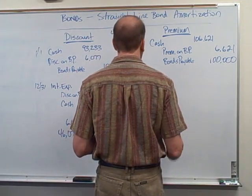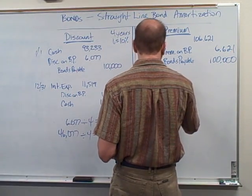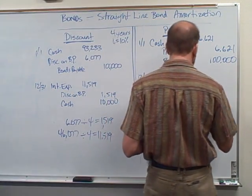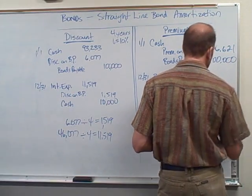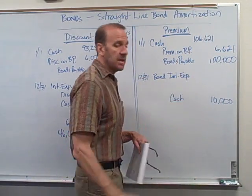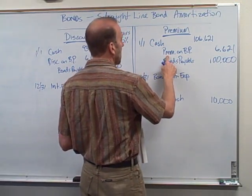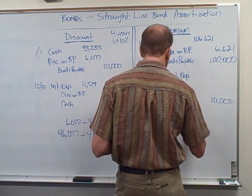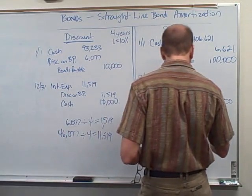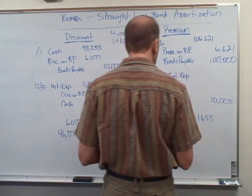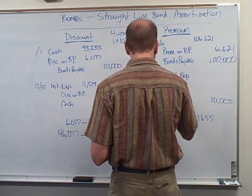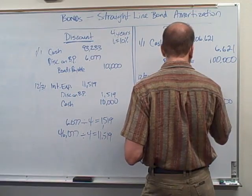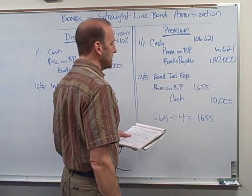Then at the end of the year we're going to have bond interest expense, just like on the other one. We'll leave a space here. Cash is always the same — ten percent of the hundred thousand. Whatever the interest rate is, you multiply that by the bonds payable; that's the cash amount going out, so we credit cash. I like to take the premium on bonds payable — six thousand six twenty one — divided by four, which gets me one thousand six hundred fifty five. So the premium on bond payable is going to be used up at one thousand six hundred fifty five dollars.